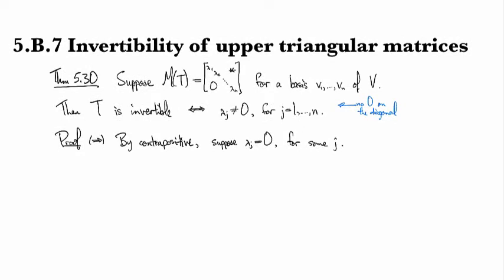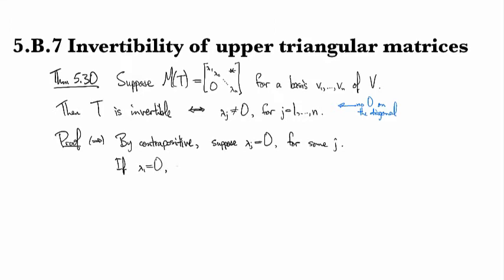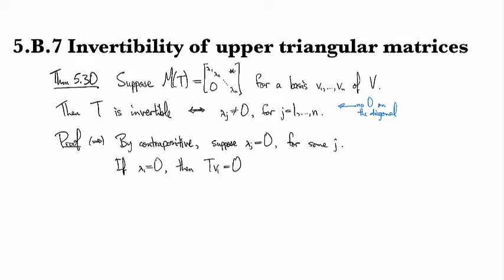We'll use this to show that T is not invertible. If lambda_1 equals zero, then T(v_1) equals zero because that whole first column is equal to zero in the matrix. And we're done.